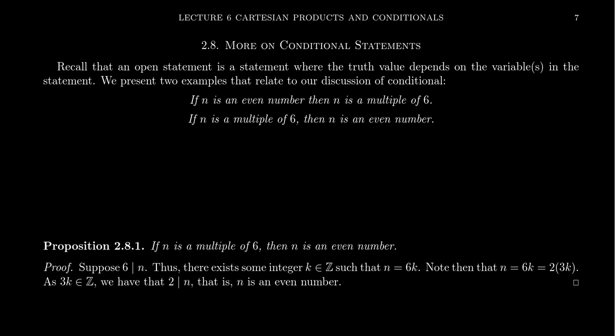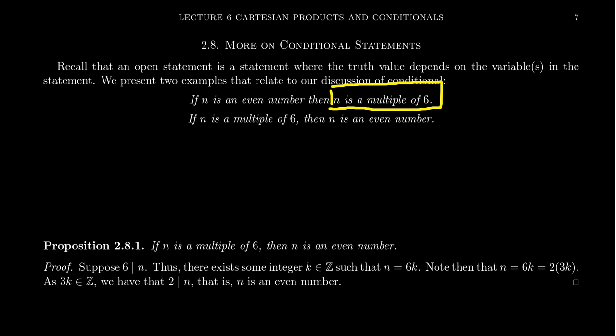Consider the following primitives. Take the primitive 'n is an even number.' We've looked at this before. Whether n is an even number depends on what n is — if n is 6, it's true, but if n is 5, that's false. Similarly, the primitive 'n is a multiple of 6' also depends on the choice of n. If n is 12, it's a multiple of 6, but if it's 5 or 4, it's not. The truthfulness depends on the choice of n.